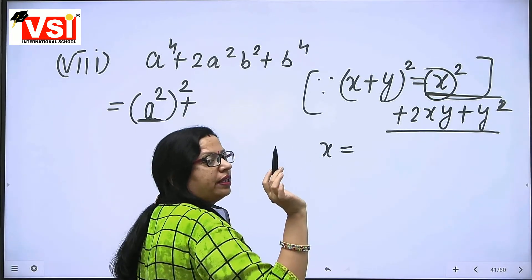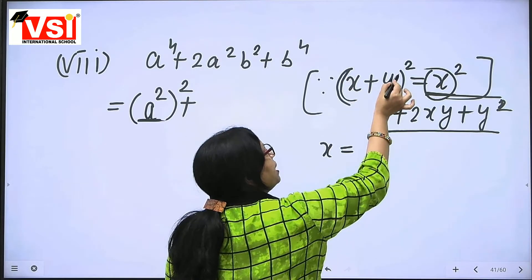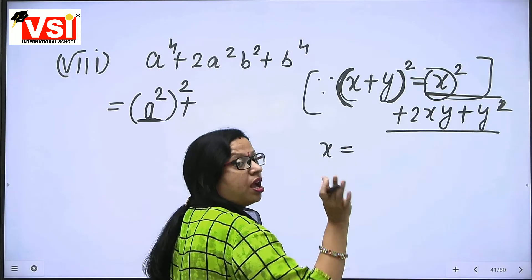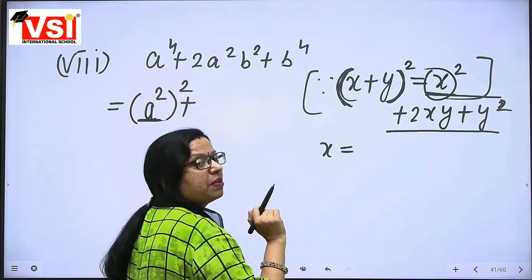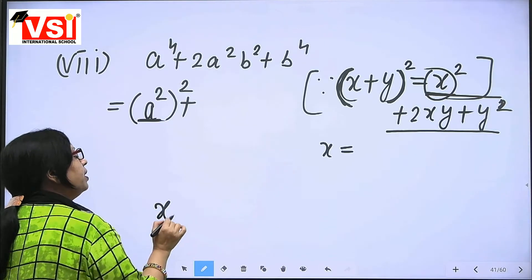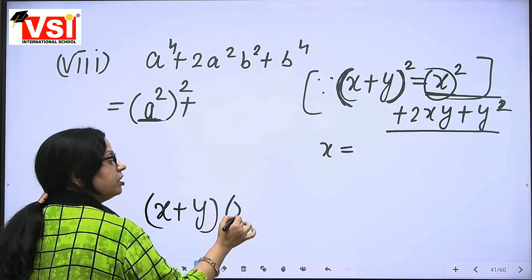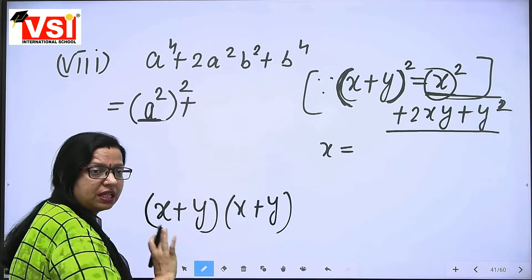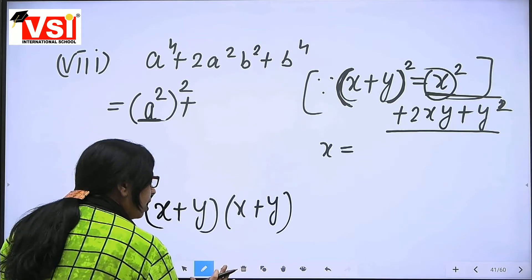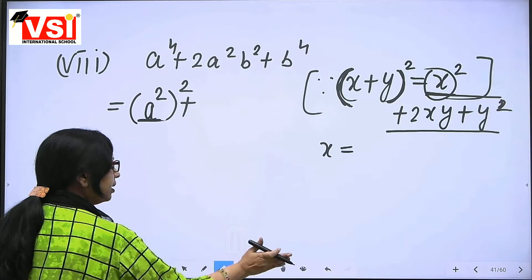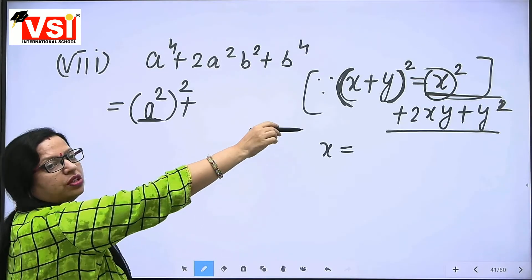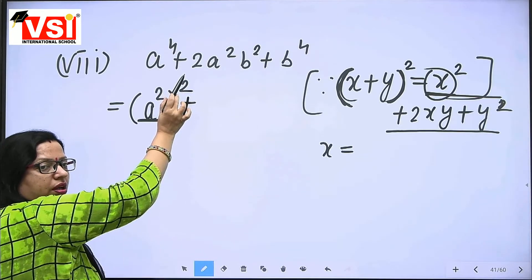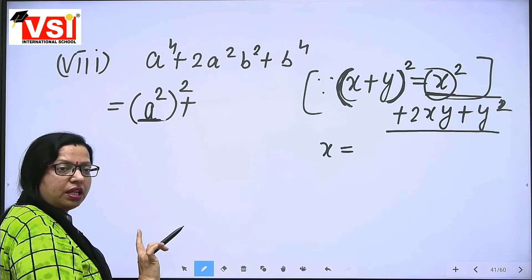Because I want at the last this short form — X plus Y whole square. When X plus Y whole square comes in our last form, then easily we can write it as X plus Y, X plus Y — two times. That is how we write the last factor, because it is whole square.